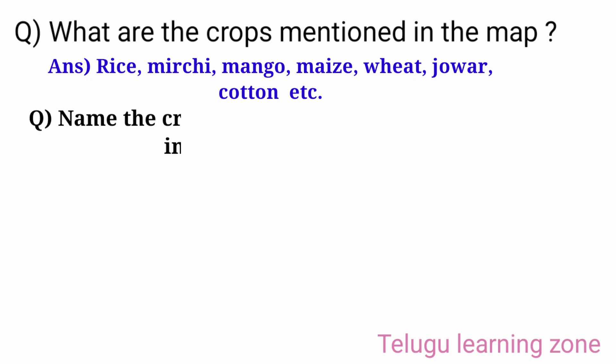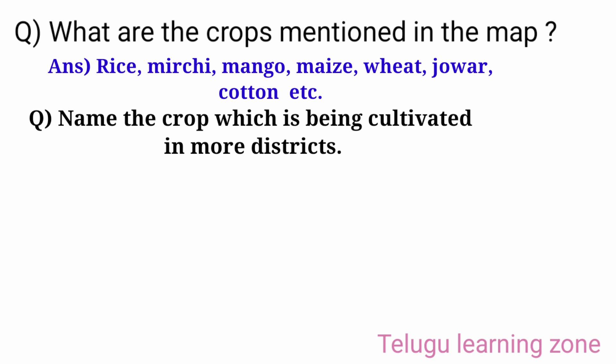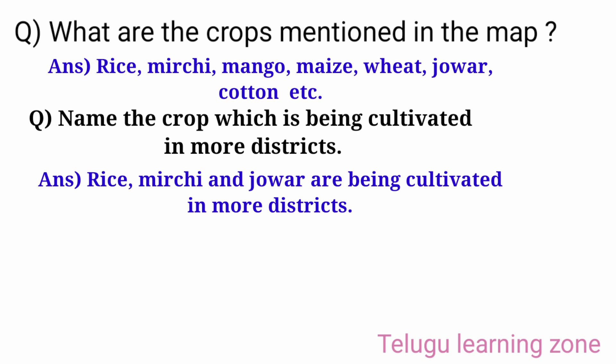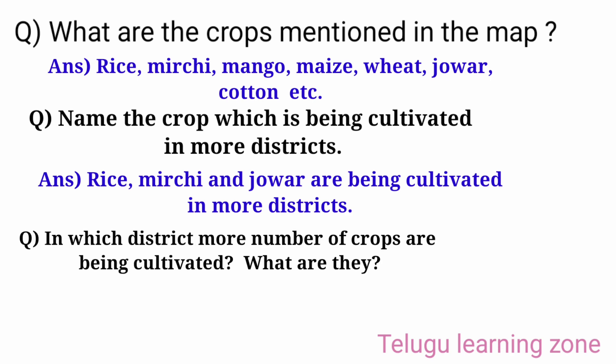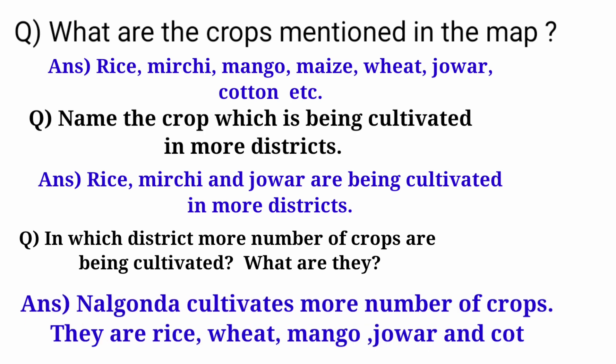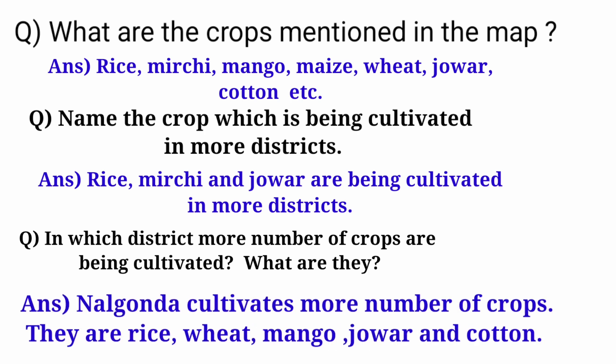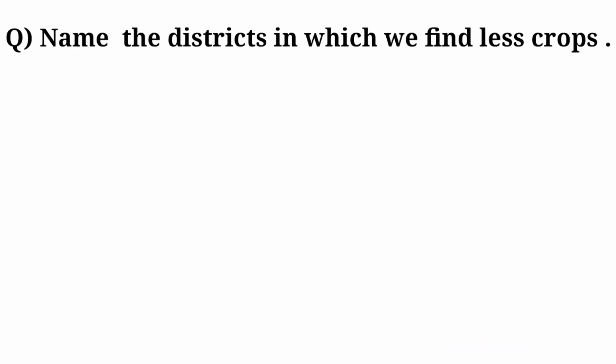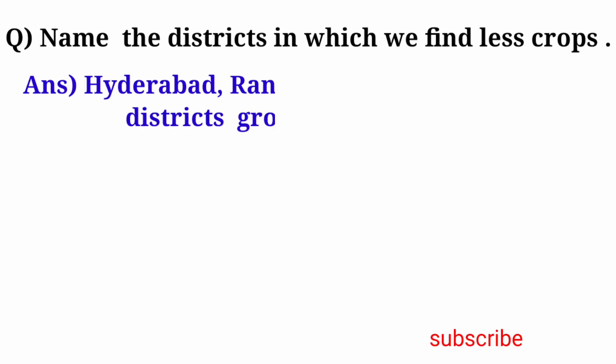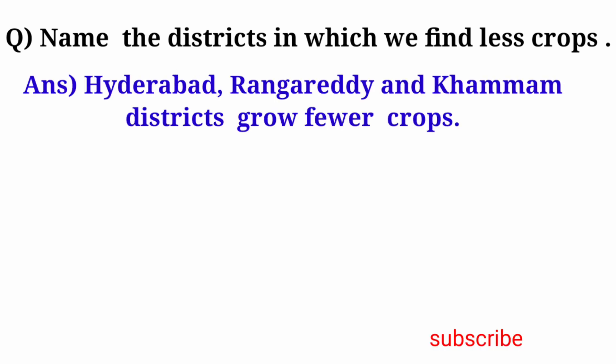Question: Name the crop which is being cultivated in more districts. Answer: Rice, Mirchi and Jowar are being cultivated in more districts. Question: In which district are more number of crops being cultivated? Answer: Nalgonda cultivates more number of crops — they are rice, wheat, mango, jowar and cotton. Question: Name the districts in which we find fewer crops. Answer: Hyderabad, Rangareddy and Khammam districts grow fewer crops.